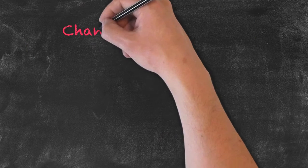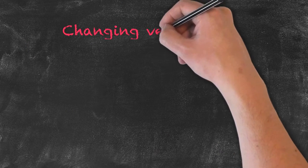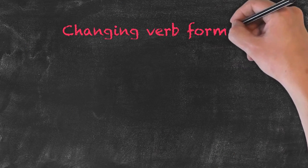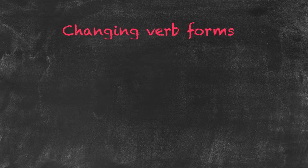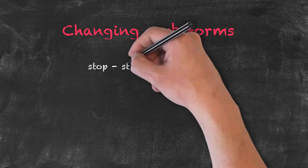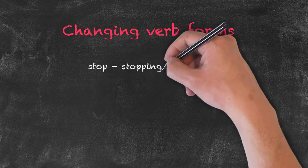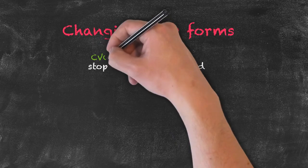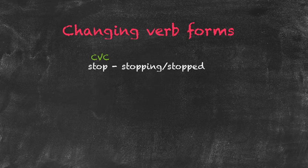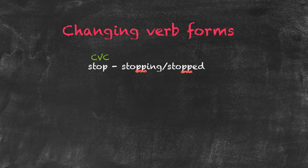When changing the form of our verbs, there are a few patterns to keep in mind. First, we have our one-syllable verbs which follow a pattern at the end: consonant, vowel, consonant. In this instance, we have to double our final consonant before adding ING or ED.